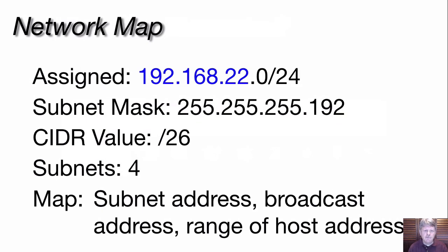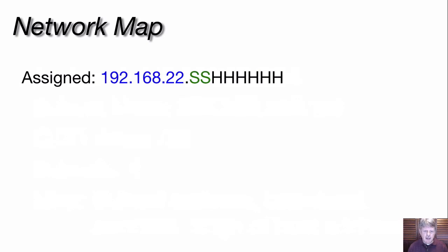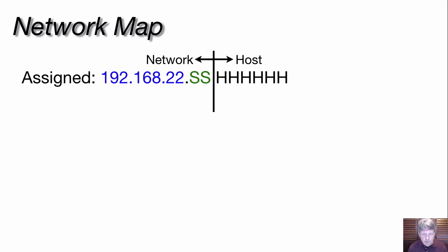The last thing we need to do is define the network map. We know our assigned address, subnet mask, CIDR value, and that we're going to have four subnets. For each subnet we need the subnet address, broadcast address, and the valid range of host addresses. Using our CIDR value of /26, we can draw a dividing line between network bits and host bits — everything to the left is network, everything to the right is host.